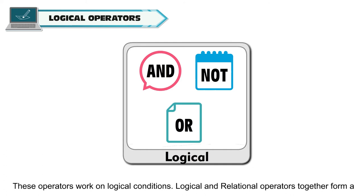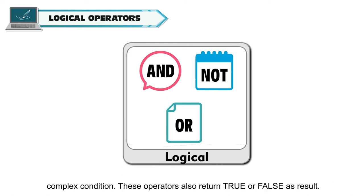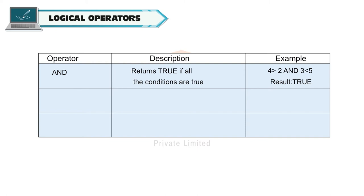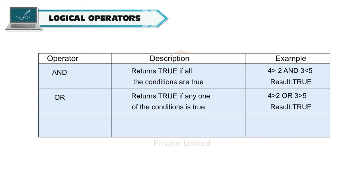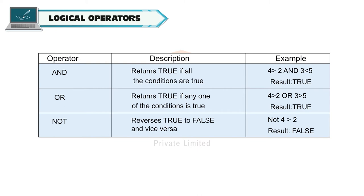Logical operators work on logical conditions. Logical and relational operators together form a complex condition, and these operators also return true or false as a result. And returns true if all conditions are true — for example, 4 > 2 And 3 < 5 is true. Or returns true if any one condition is true — for example, 4 > 2 Or 3 > 5 is true. Not reverses true to false and vice versa — so Not (4 > 2) is false.